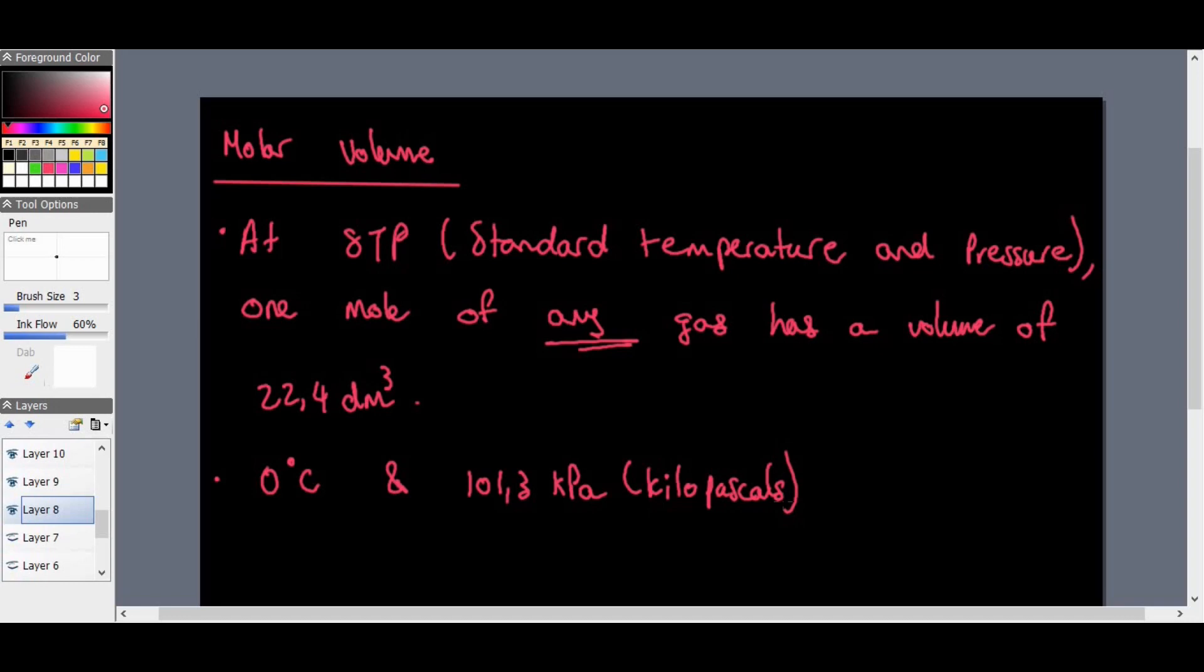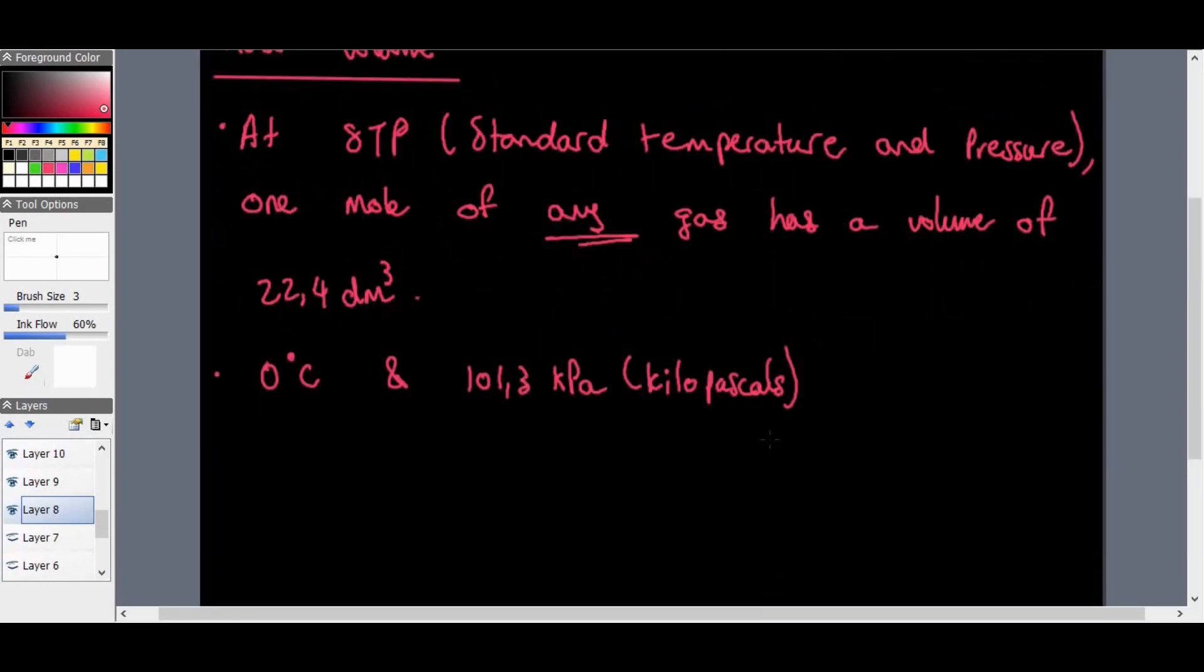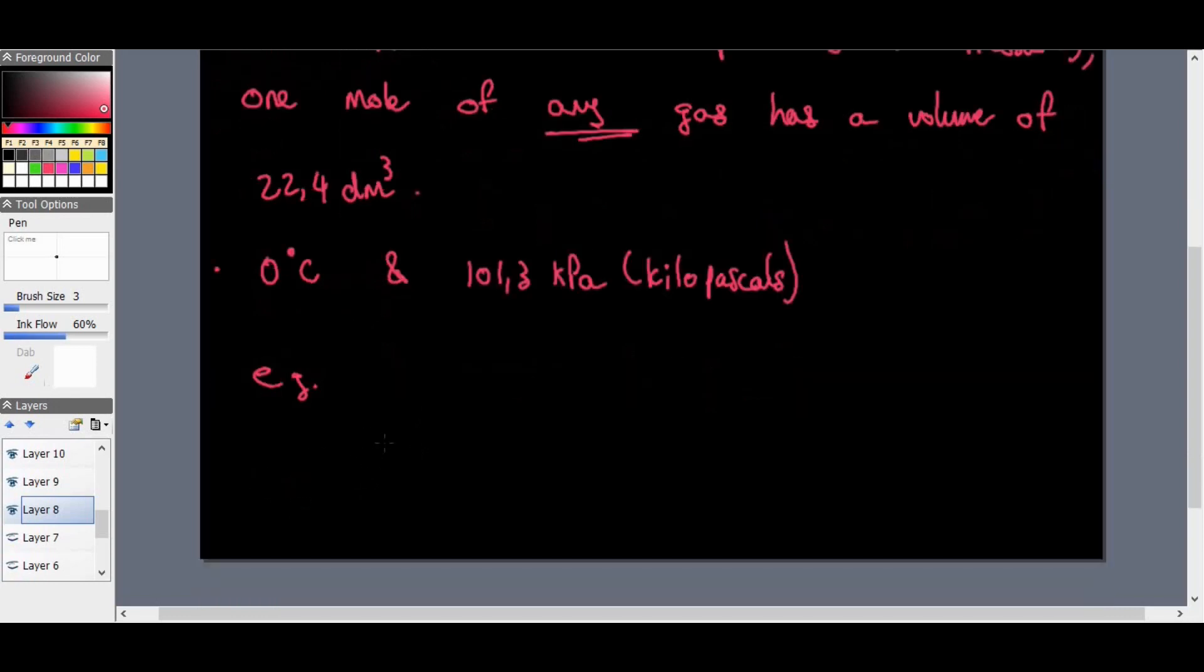Now the volume of gases that react or are produced in a chemical reaction, they are proportional to the number of moles. So if we take a little example here, let me take a little bit of an example here of a reaction. Let's say we've got nitrogen gas plus hydrogen gas. And we've got ammonia now. Ammonia gas.